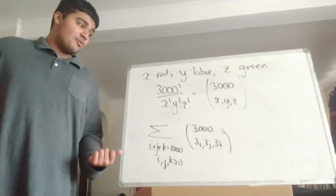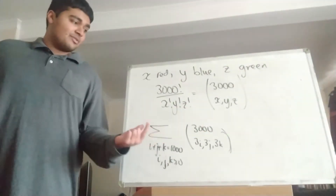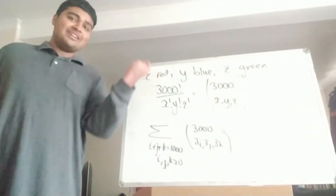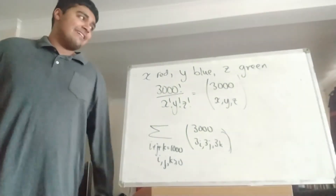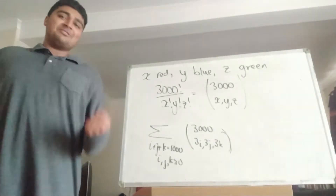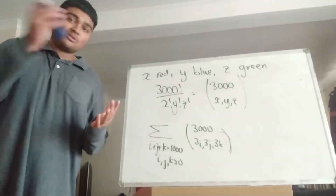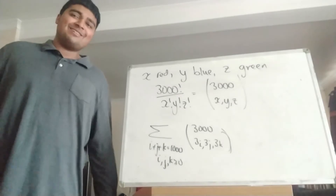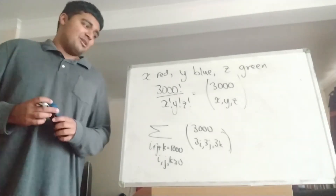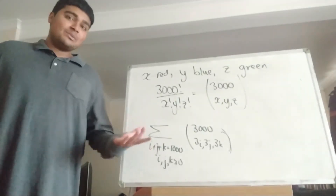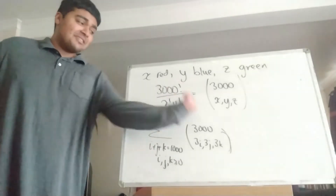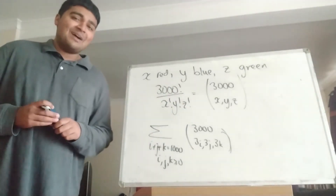Once we compute this number, this will give us the solution to our problem, because we're colouring 3i of the marbles red, 3j of the marbles blue, and 3k of the marbles green. The reason we have i plus j plus k equals 1,000 is because then 3i plus 3j plus 3k equals 3,000, covering all the marbles. And of course we need i, j, k ≥ 0, because we can't have negative green marbles, for example. The challenging bit is computing this number — this summation involves 3,000 factorial in the numerator, which is an extraordinarily large number, so we want to find an equivalent summation with only a few terms we can compute by hand. That's where complex numbers come in.